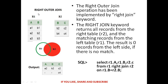Next, right outer join. We use the same tables for easy implementation. The right outer join operation is implemented by the RIGHT JOIN keyword. The RIGHT JOIN keyword returns all records from the right table R2 and the matching records from the left table R1. The result is zero records from the left side if there is no match. Both tables are indicated by two circles, with R2 content highlighted in red.